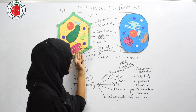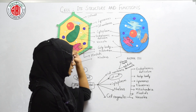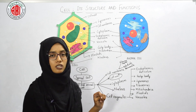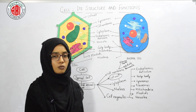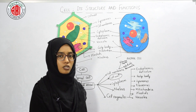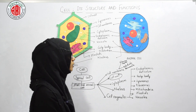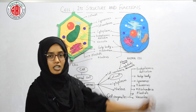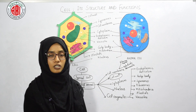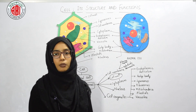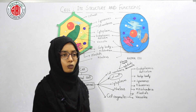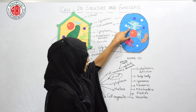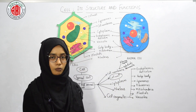Cell organelles are structures present inside a cell. The endoplasmic reticulum shows a network of tubes and sheets and is divided into two types: smooth endoplasmic reticulum, which does not possess ribosomes on its membrane, and rough endoplasmic reticulum, which has ribosomes attached to its membrane. The rough ER provides surface for ribosomes, where protein synthesis occurs.